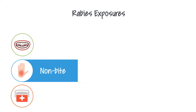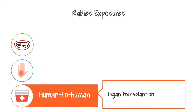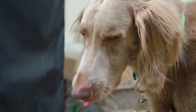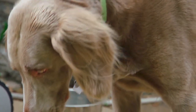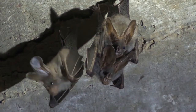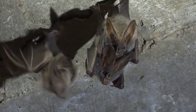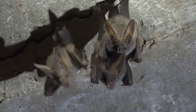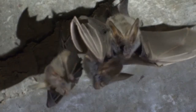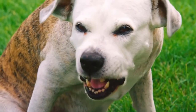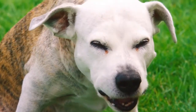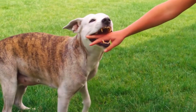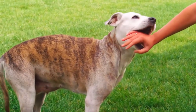Rabies has also been transmitted between humans through organ transplantation. Unrecognized rabies in organ donors has resulted in transmission to the organ recipients. Rabies virus is typically present in the saliva of clinically ill mammals, and transmission between animals and humans usually occurs through animal bites or sometimes scratches. Rabid animals often display excessive salivation and abnormal or aggressive behavior, including biting, which helps the virus spread.